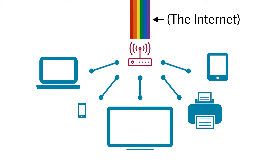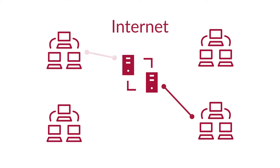Your ISP's router is then connected to another, larger network above them. It turns out that most ISPs have their own ISPs, called Tier 1 or Backbone providers. And finally, the Tier 1 providers all interconnect with one another. Because of this design, each computer on the internet can be connected to each other computer on the internet through a series of hops from router to router along the way.